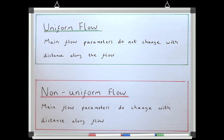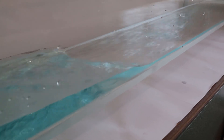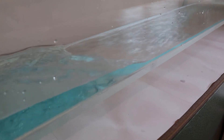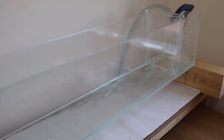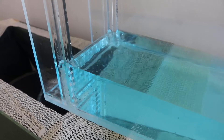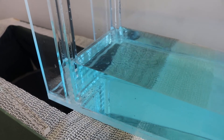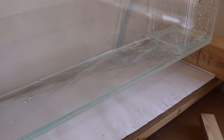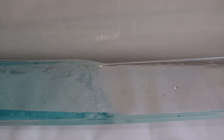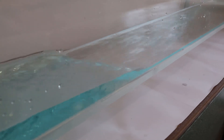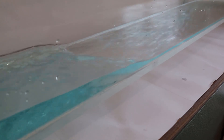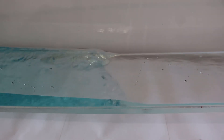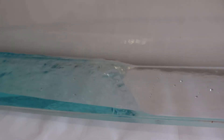Non-uniform flow is when any of the main flow parameters change with distance along the flow. Probably the best example we can create in the flume is something called a hydraulic jump. This is what happens when fast-moving shallow flow, called supercritical flow, meets slow-moving deep flow, called subcritical flow. At the point where the two types of flow meet, we get a sudden change in flow depth and therefore cross-sectional area. We'll dedicate a whole video to explaining hydraulic jumps later in the series, but for now we can enjoy it as a great example of non-uniform flow.